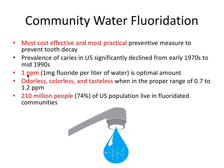One part per million (ppm), which is one milligram of fluoride per liter of water, is the optimal amount. Fluoride is odorless, colorless, and tasteless when in the proper range of 0.7 to 1.2 ppm — completely imperceptible. About 210 million people, approximately 74% of the US population, live in presently fluoridated communities.